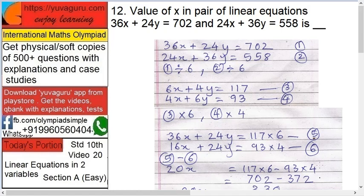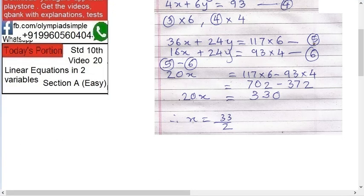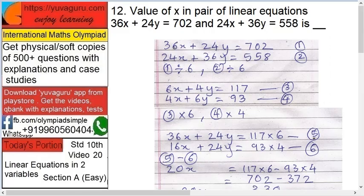Five minus six means 24y is gone. 36 minus 16 is 20x equals 702 minus 372, so 20x equals 330. Therefore, x equals 33 divided by 2. That's the answer. The problem is simple. It only needs practice of multiplications and learning of tables.